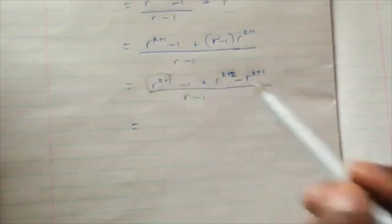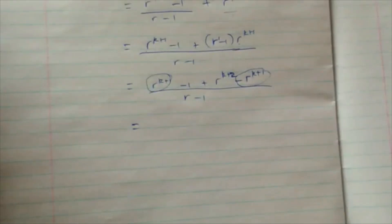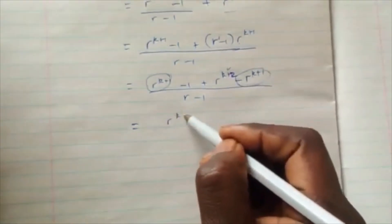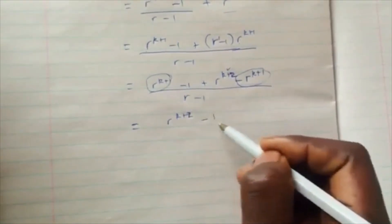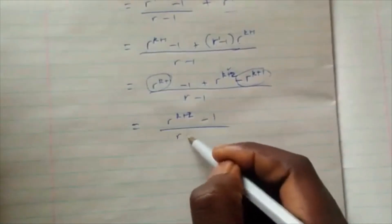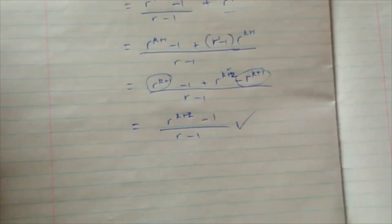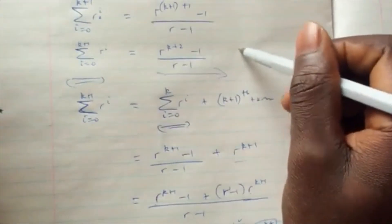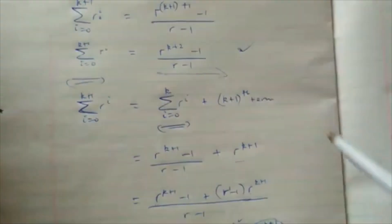We can see that r^(k+1) and negative r^(k+1) cancel out, leaving r^(k+2) minus one all over r minus one. We check that this matches the expression we required when we substituted k plus one, and indeed it is the same expression. Therefore we have proved the statement true for n equals k plus one.